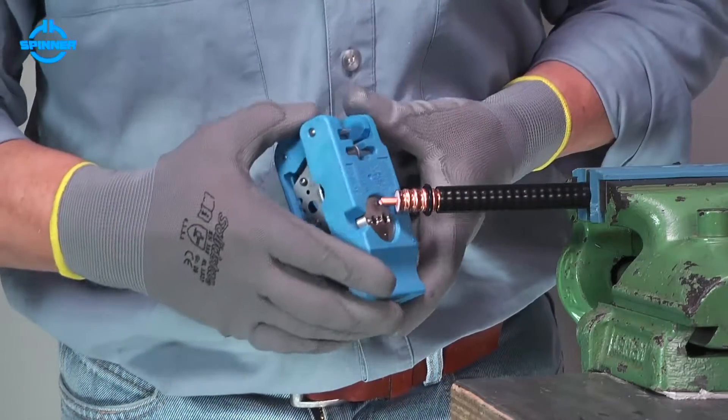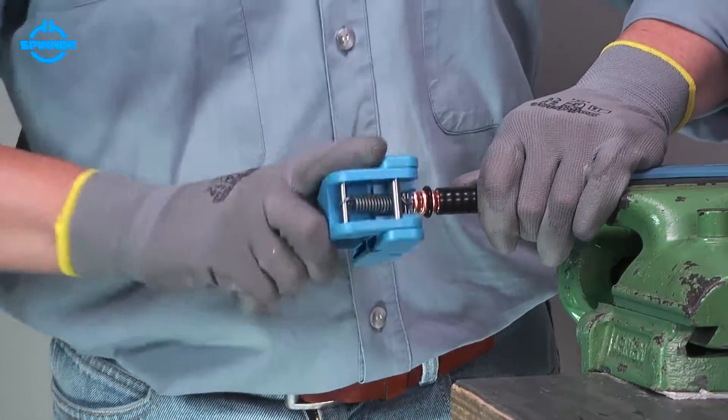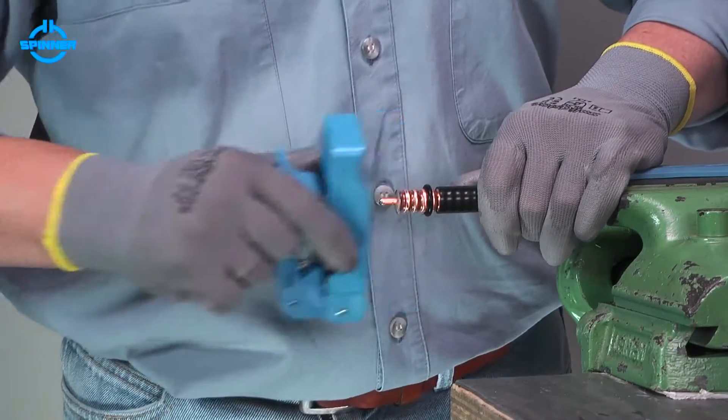Insert the inner conductor into the chamfer unit of the trimming tool. Then rotate the trimming tool to chamfer the end of the inner conductor.